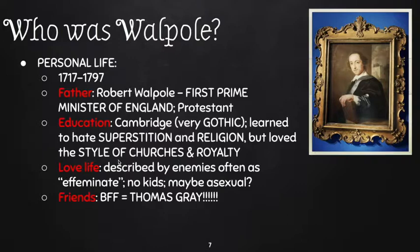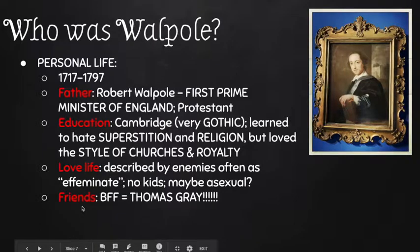Walpole learned to hate superstition and religion, but he loved the style of churches and royalty — very ironic. He hates religion but loves churches, loves the style, and loved the dignity and ornate beauty associated with the monarchy. Regarding his love life: it's a little controversial. He never got married and was described by his enemies as effeminate. He had no children, and some speculate he was maybe asexual — there's not a lot of evidence of any sexual relationships with anyone, man or woman. His best friend was none other than Thomas Gray, who wrote the churchyard elegy.